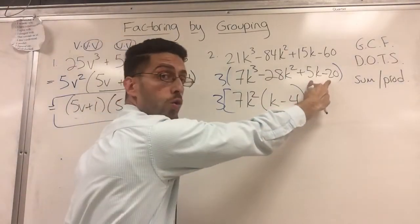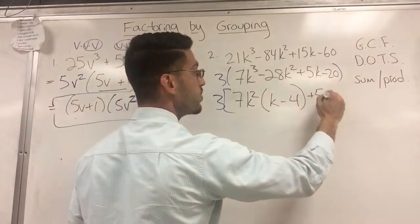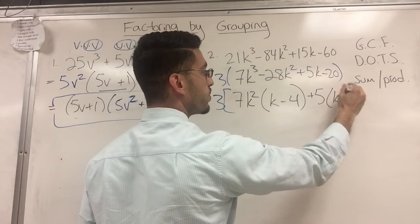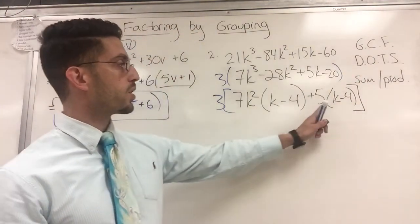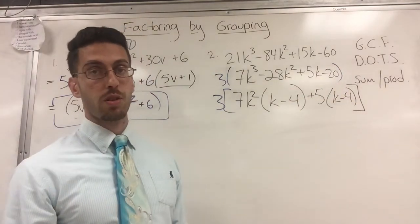Plus, now I'm looking at only these two terms. Is there a GCF there? Yes, there is. It's 5. What's left? Just K minus 4. And then I'll close my brackets. Notice 5K, 5 times 4 is 20. So I factored correctly.